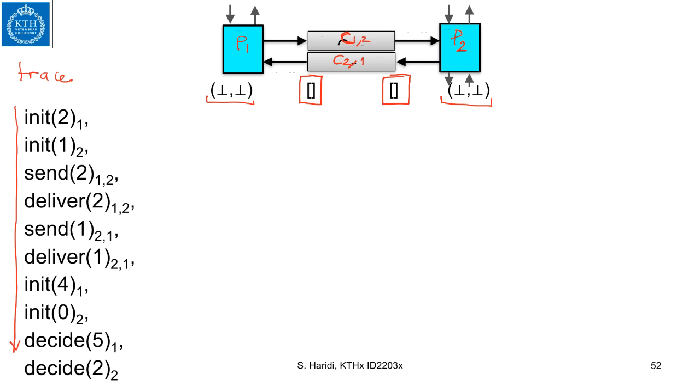Then we execute the first event which initializes p1. Here what we get, we initialize this component. Then we execute the second event, which init1 at process2, then we initialize this component.